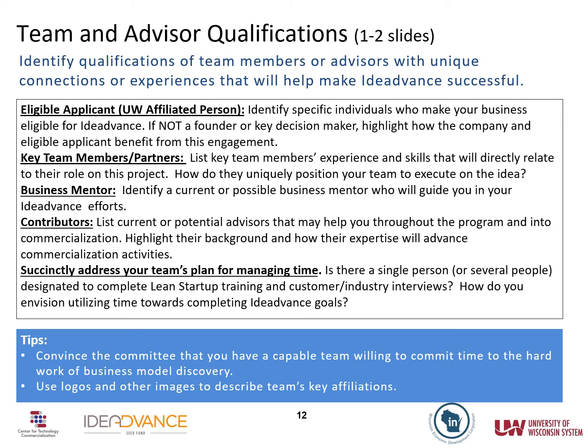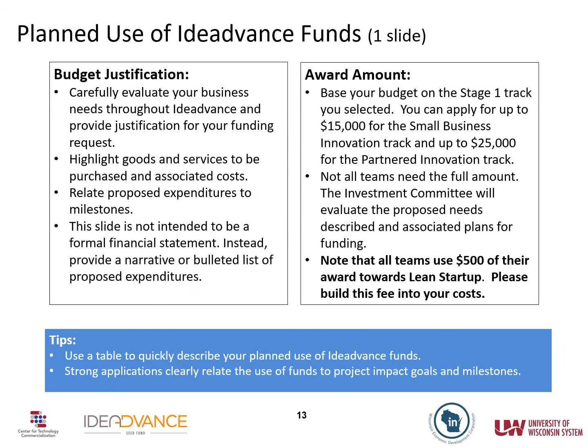The team slide is fairly self-explanatory — who have you assembled to participate in the program and how will this team manage its time to get the most out of it? Don't forget to note the UW affiliation of at least one team member. The final piece of your application is a list of how you will use the IDEA Advance funds. Be specific enough to allow the review committee to see how you intend to fund your vision. One way is to correlate the budget with your list of milestones — for example: to achieve Milestone 1, we will allocate $5,000 to travel to a conference to conduct customer discovery interviews focused on X, Y, and Z. For Milestone 2, we are budgeting $3,500 for such-and-such activities, and so on.